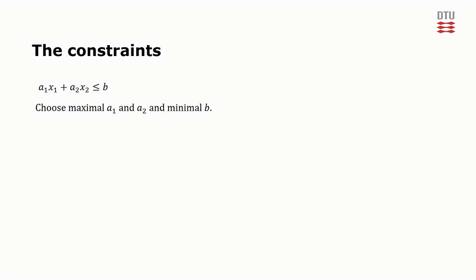Naturally, if the constraint was a greater than or equal to constraint, we have to pick the minimal value of a1 and a2 and the maximal value of b. Robust optimization does not handle equality constraints.